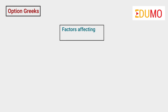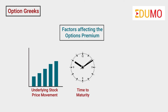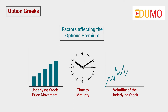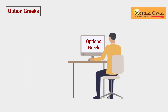There are several factors which affect the options premium, which are the underlying stock price movement, time to maturity and volatility of the underlying stock, to name a few. The understanding of an option's premium sensitivity to Greeks is very helpful and it can improve trading performance in options.